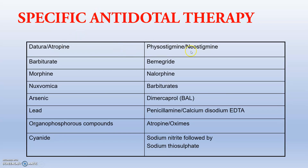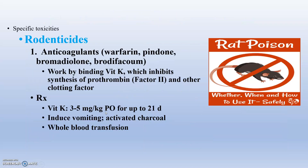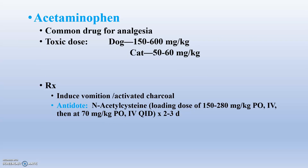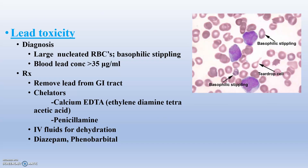For specific antidotal therapy: atropine poisoning is treated with physostigmine; barbiturates with bemegride; morphine with nalorphine. For rodenticide toxicity, which is very common in the field, rodenticides work by binding vitamin K, inhibiting synthesis of prothrombin and blocking clotting factors. Treatment involves whole blood transfusion or injection of vitamin K. For acetaminophen poisoning, the antidote is N-acetyl cysteine.